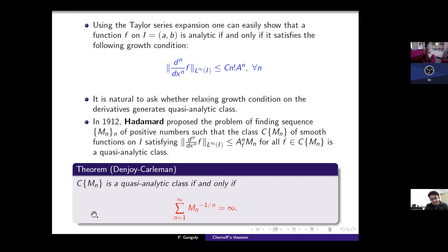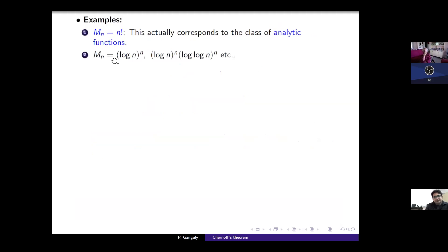Once we have this necessary and sufficient criterion, we can find examples. If we take m_n to be n-factorial, this class corresponds to analytic functions, and one can check the Denjoy-Carleman condition is satisfied. One can also take m_n to be (log n)^n, or (log n)^n times (log log n)^n, and so on. These give quasi-analytic classes which are not merely analytic. These examples were first pointed out by Denjoy.